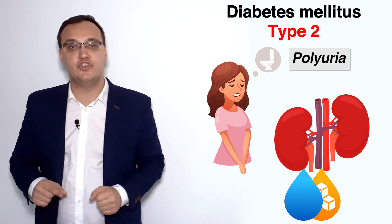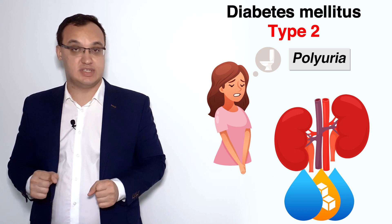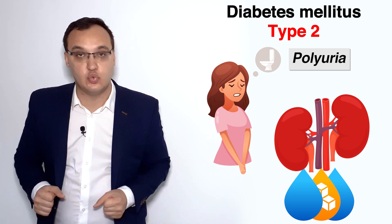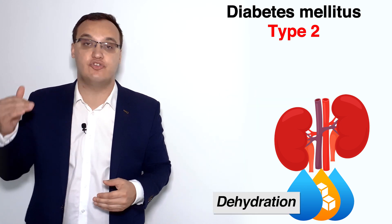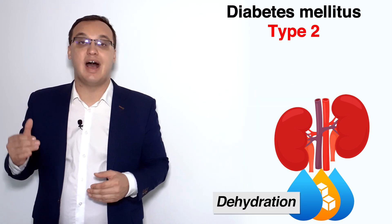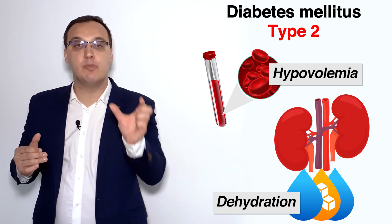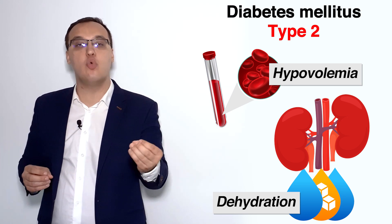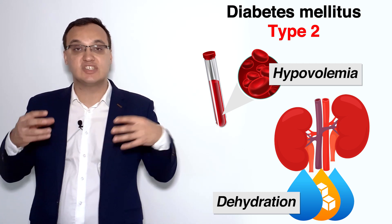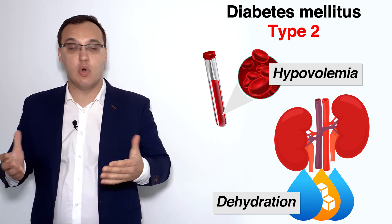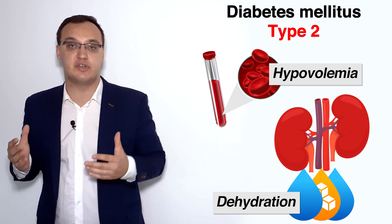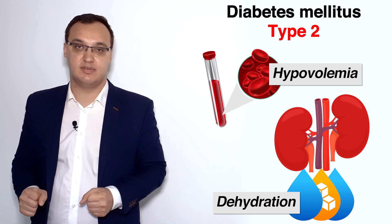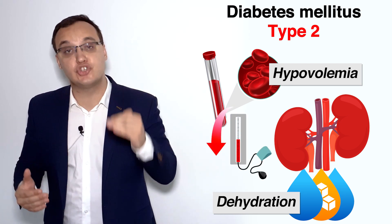If you have polyuria, you excrete a lot of fluid. You excrete glucose but also a lot of water, so you get dehydration — hypovolemia. Hypo means low, vol means volume, and -emia refers to the blood. You have a low volume of blood because you excrete a lot of water. Since blood consists mostly of water, if we excrete a lot of water in the urine, the blood volume drops and your blood pressure will also drop.